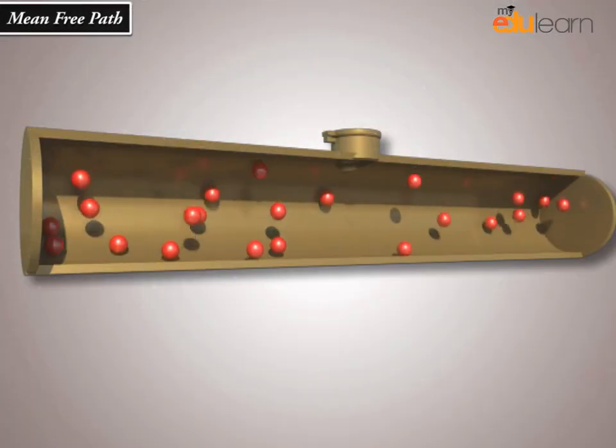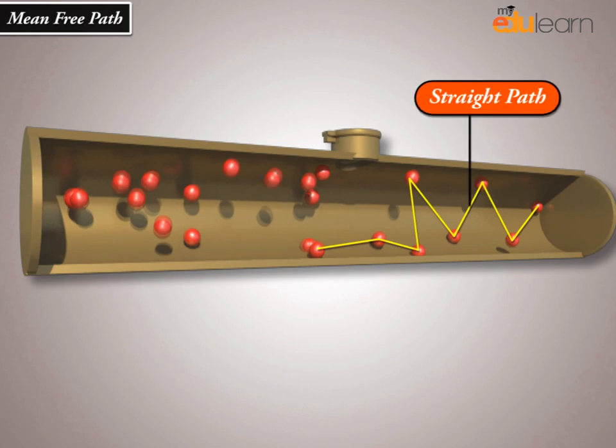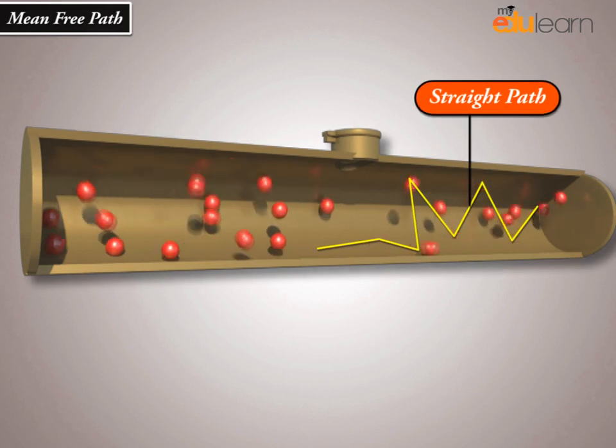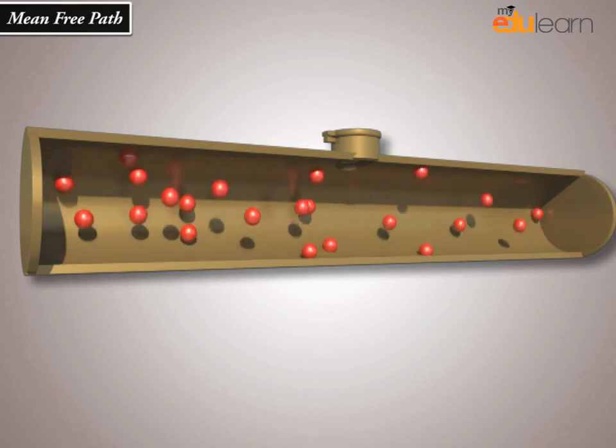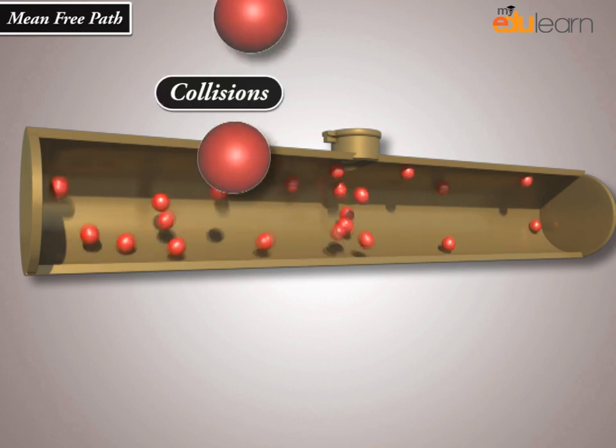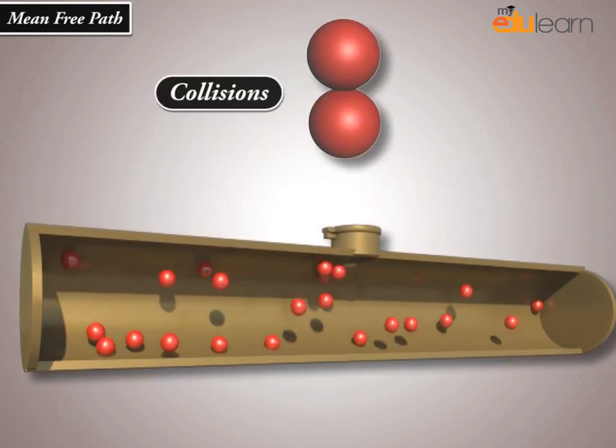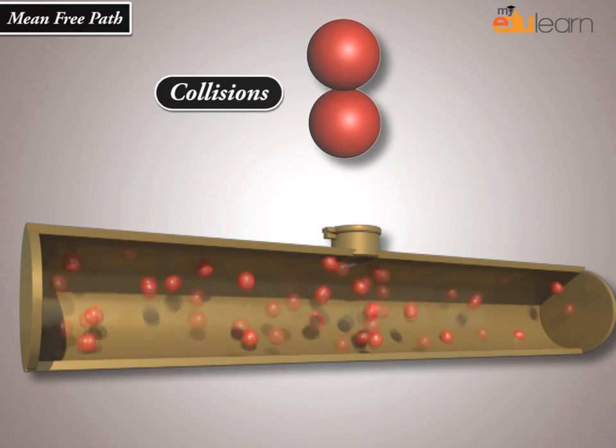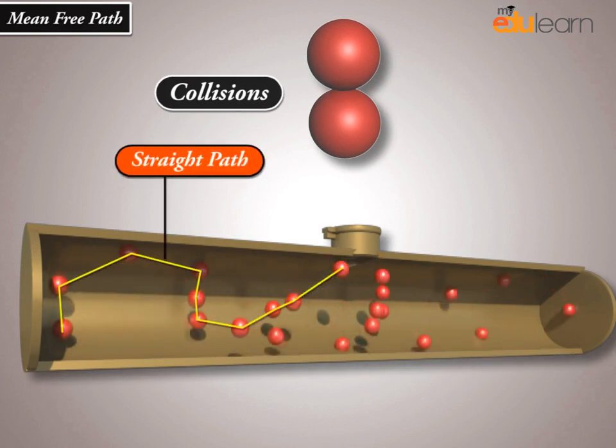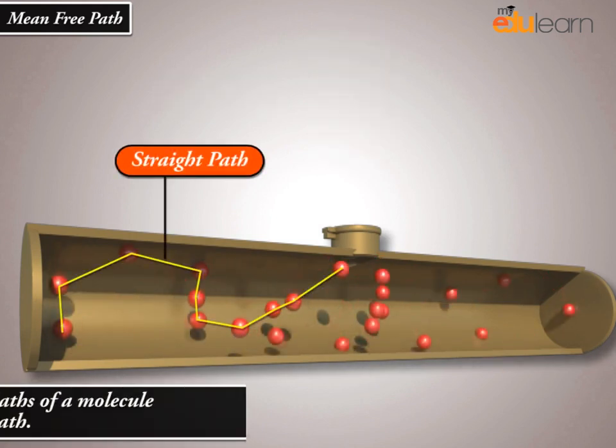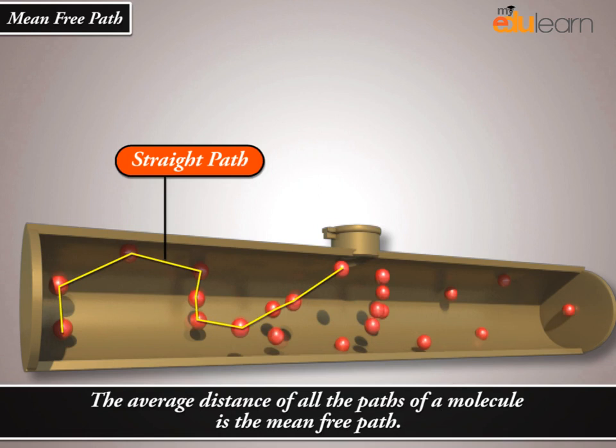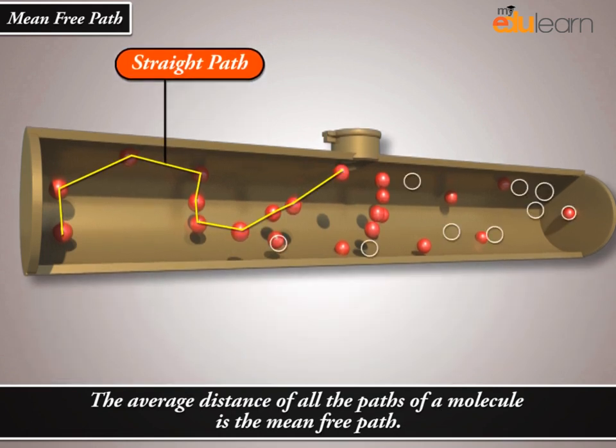Therefore, they can never move in a straight path without interruptions. Between every two consecutive collisions, a gas molecule travels a straight path. The average distance of all the paths of a molecule is the mean free path.